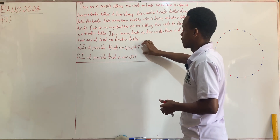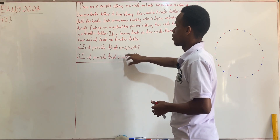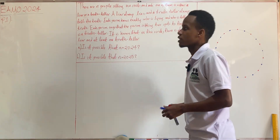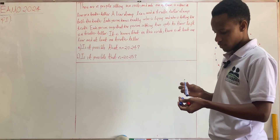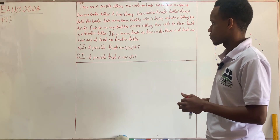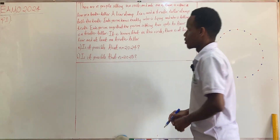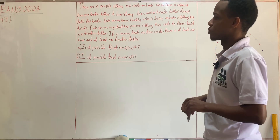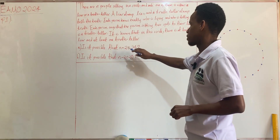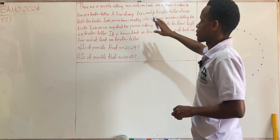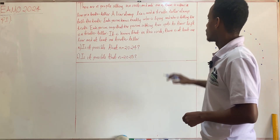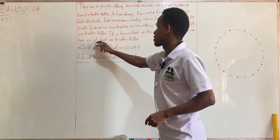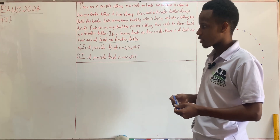The approach to solve this problem is to consider small values of n — such as n equals 2, 3, or 4 — and then try to generalize to find which values of n satisfy the problem conditions. We already know there is at least one liar and at least one truth-teller, so n cannot equal 1; there must be at least two people.